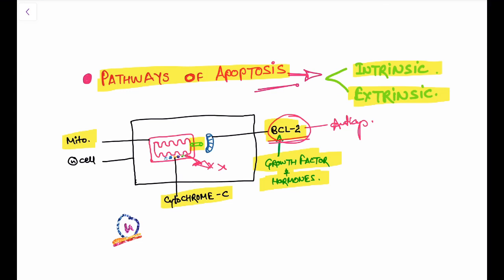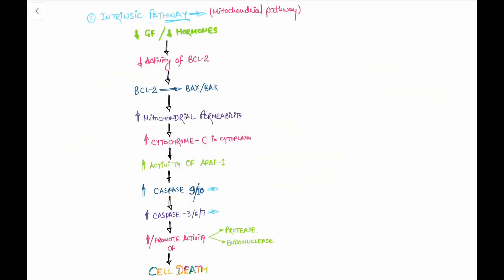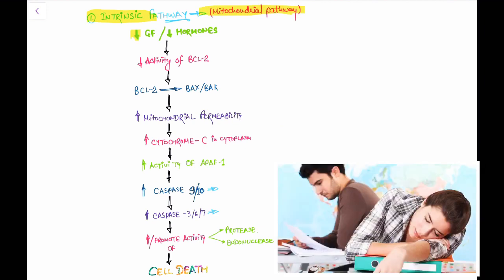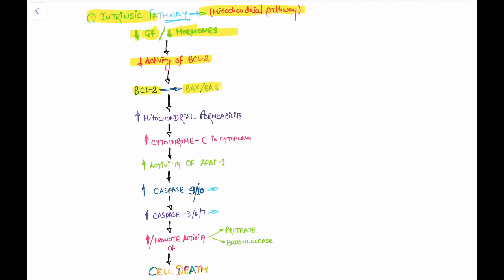BCL-2 is supported by growth factors and hormones, which act like a salary for BCL-2, helping it do its work. The first pathway is the intrinsic pathway, also called the mitochondrial pathway. Due to deficiency of growth factor or hormone, it results in decreasing the activity of BCL-2, and BCL-2 is replaced by BAX, which is a pro-apoptotic gene.